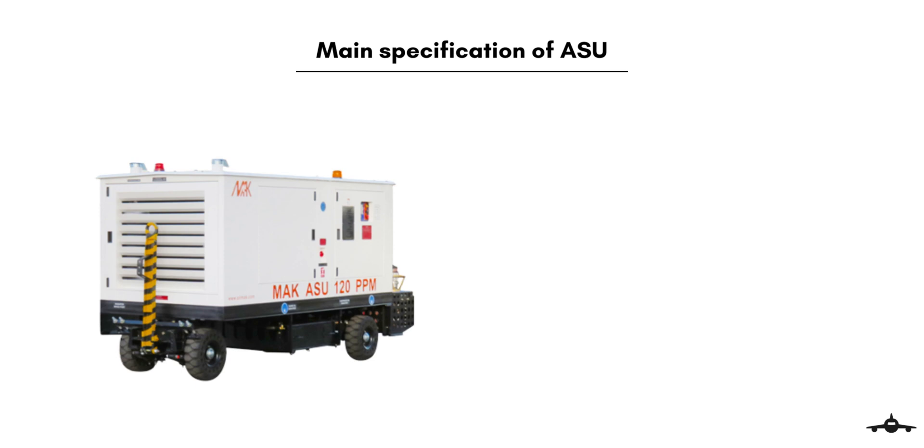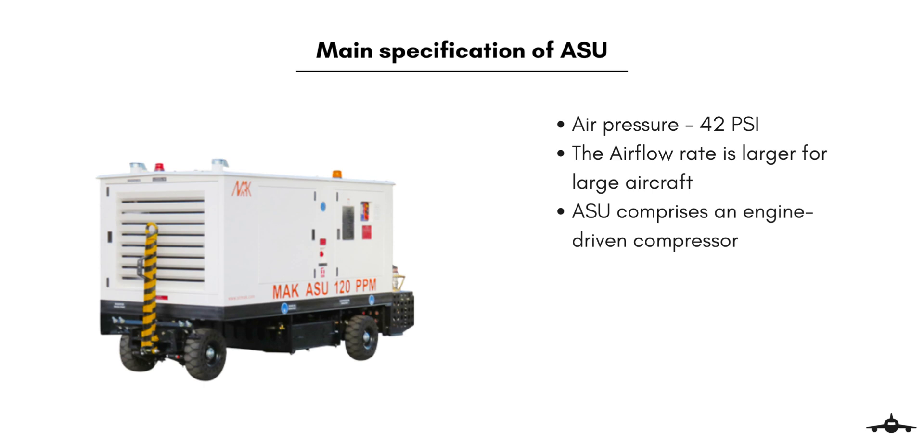The main specifications of an air starter unit are: Its air pressure is in the range of 42 pounds per square inch which is the most common and services most of the aircraft. The air flow rates are different for various aircraft. It is larger for larger aircraft. Also an ASU comprises an engine-driven compressor with electrical protection circuitry and an air discharge hose which connects with the aircraft.